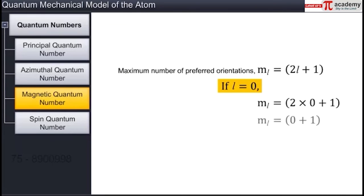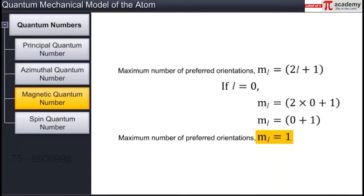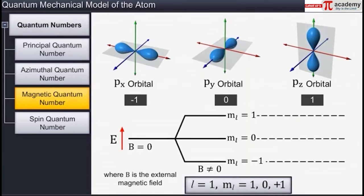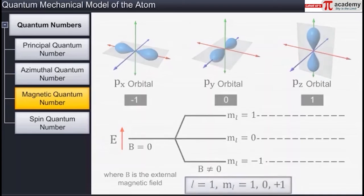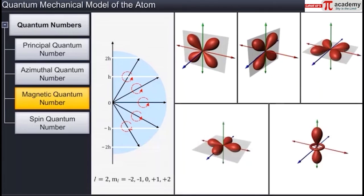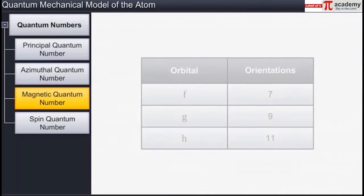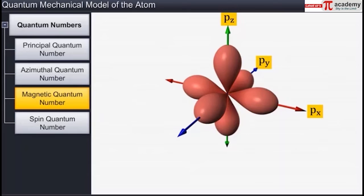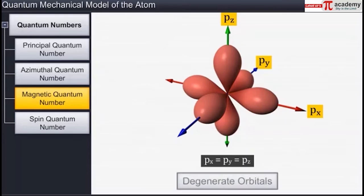For l equal to 0, the number of preferred orientations is equal to 1. Thus, the s subshell can have only one orientation in space and only one orbital. For l equal to 1, the p subshell can have a maximum of 3 orbitals with orientations along the 3 axes. Similarly, for l equal to 2, the d subshell has 5 preferred orientations and hence 5 orbitals. Using the same calculation, f, g, and h subshells can have 7, 9, and 11 orbitals each. Note that all orbitals belonging to a subshell have the same energies and are therefore called degenerate orbitals.